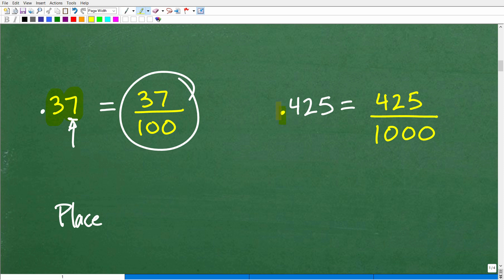All right, let's go ahead and take a look at this last example. Point four, two, five. Again, we're not going to say it that way. Point four, two, five. Tenths, hundredths, thousandths. This is four hundred and twenty-five thousandths. Okay, so you just simply write it as four hundred and twenty-five over one thousand.